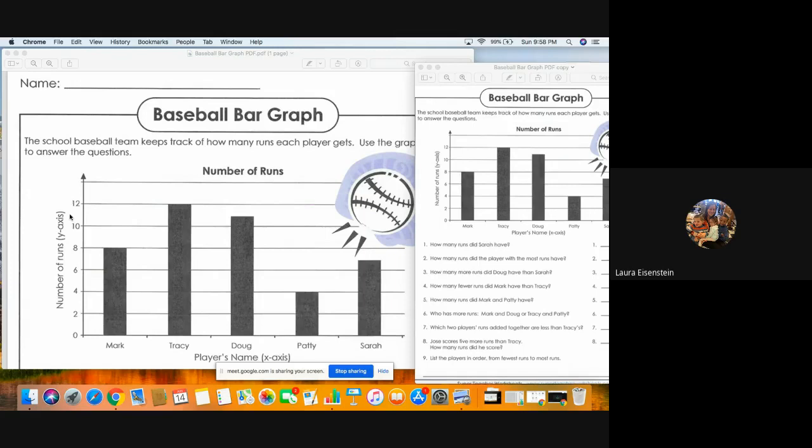So on this side of the graph, they call it the y-axis, you have the numbers for the number of runs. And then down here on the x-axis, you're going to have each teammate by name.